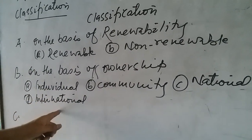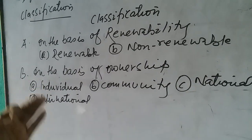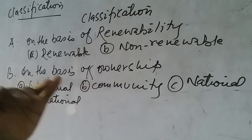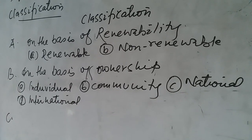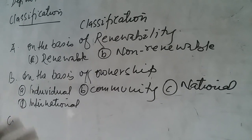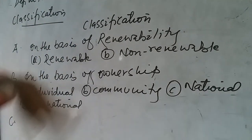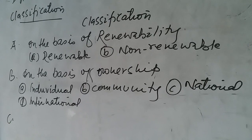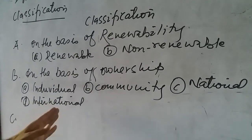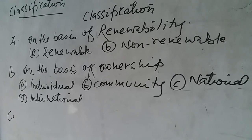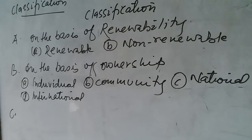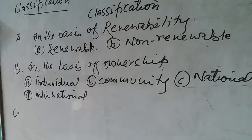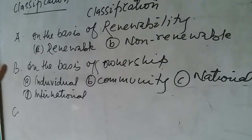The best example of international resources is the Exclusive Economic Zone. Oceans are a great example of international resources, but not all oceans. The part of the ocean that is away from the coast of a nation — about 200 km — that open ocean is called the Exclusive Economic Zone.